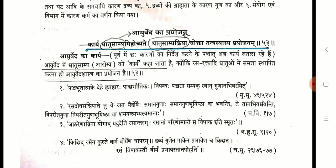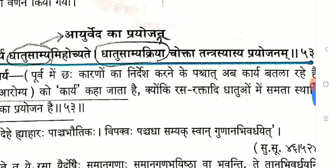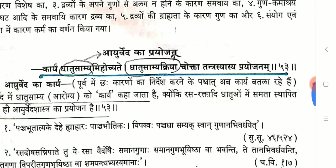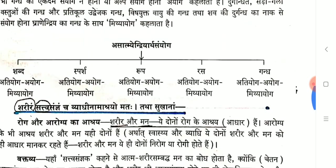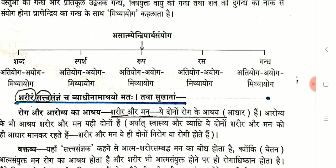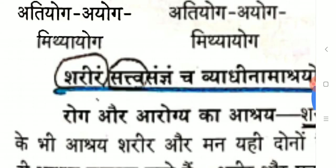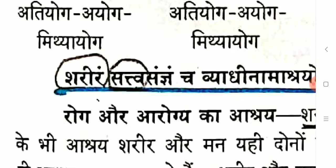Ayurveda Prayojana: the purpose of Ayurveda Shastra is Dhatu Samya Kriya. Trivita Hetu, or Trivita Hetu Sangra, and Tantra Sankraha are key concepts. Roga Adisthana — here you need to give importance to the word Sattva, because Sattva is another name for the Manas. So Sharira and Manas are the Vyadhi Adisthana.